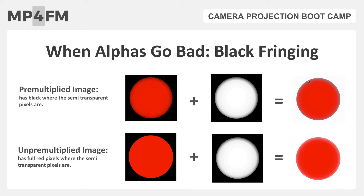It goes from this red color into this dark color, and then into the white background — where it should be doing what we see in the bottom image, transitioning from white into the background color, which is white. So the top one has black fringing and the bottom one does not. The reason this happens with pre-multiplied images is because when the alpha channel cuts out the image, it replaces those semi-transparent pixels with black, which then shows through in the final result.